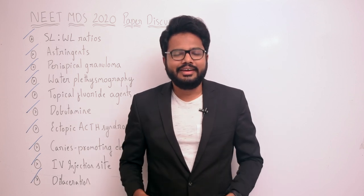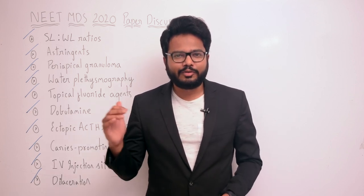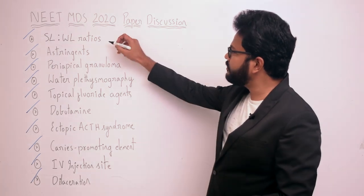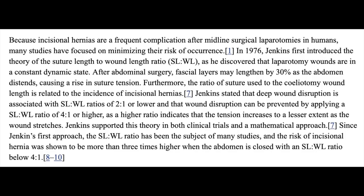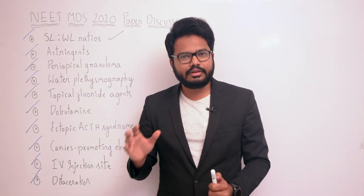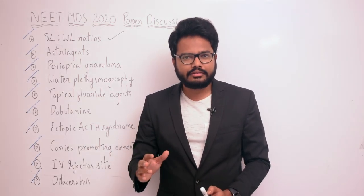In this video let's focus on the following topics, starting with suture length to wound length ratios. Jenkins stated that deep wound disruption is associated with suture length to wound length ratios of 2:1 or lower, and that wound disruption can be prevented by applying a suture length to wound length ratio of 4:1 or higher, as a higher ratio indicates that tension increases to a lesser extent as the wound stretches.